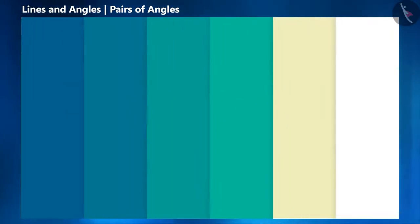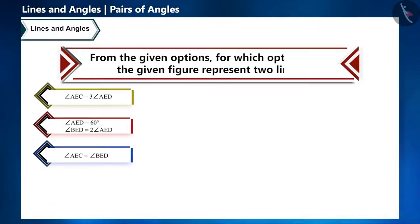So let's start with a question: of the given options, for which option does the figure represent two lines?